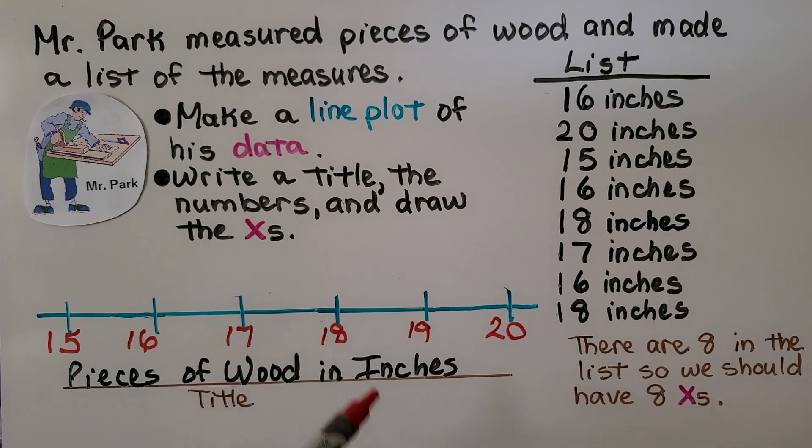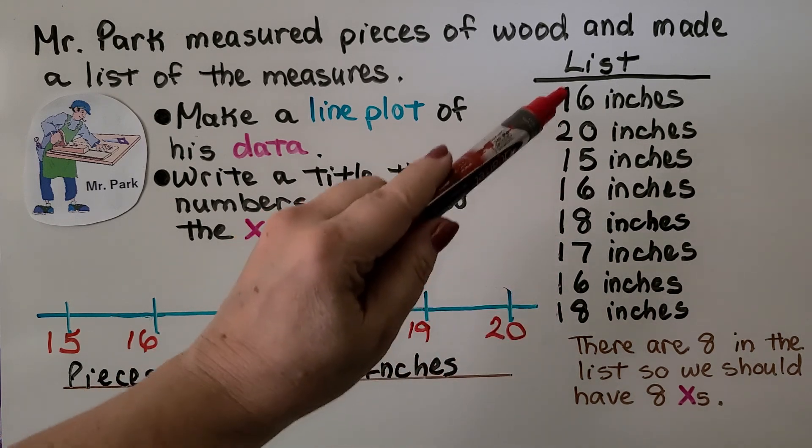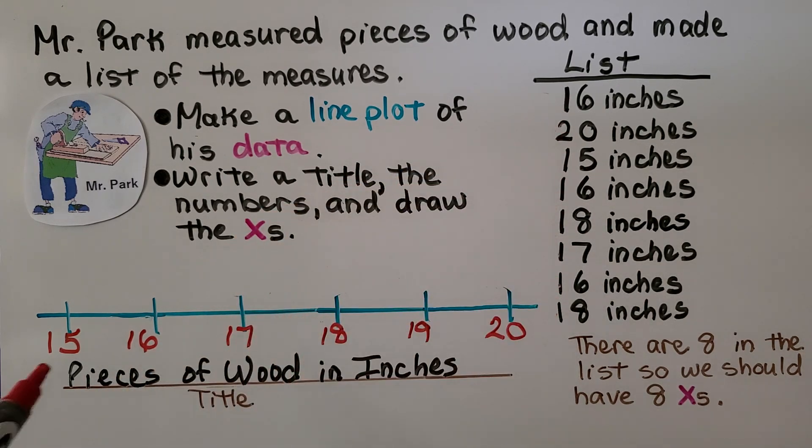Now do you notice I wrote 19 and there is no 19 on the list. We still wrote it because it was in order from least to greatest and all the numbers.